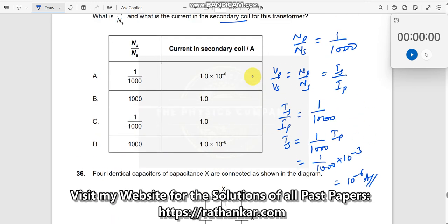Now let us see which is the right one. NP by NS was 1 by 1000 as we have seen, 10 and 10 power minus 6. So answer is E.